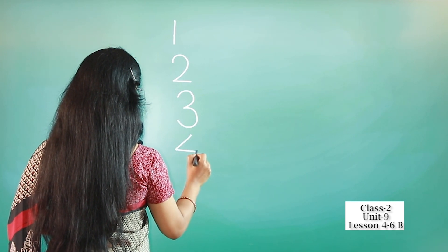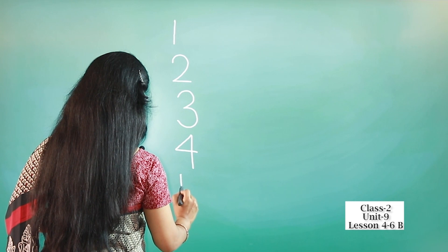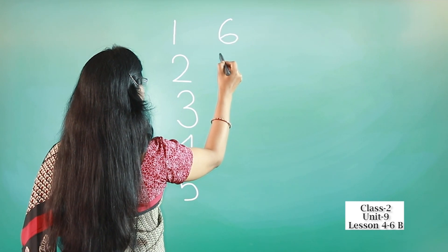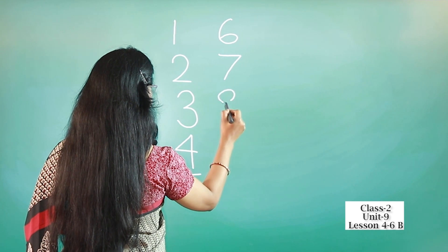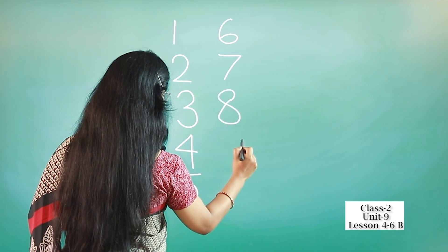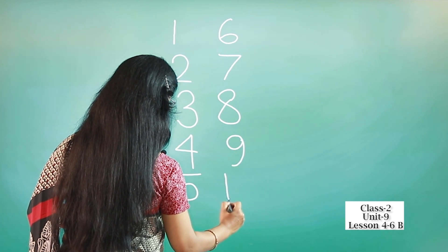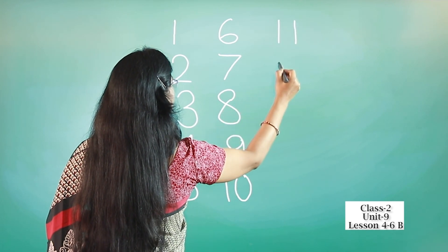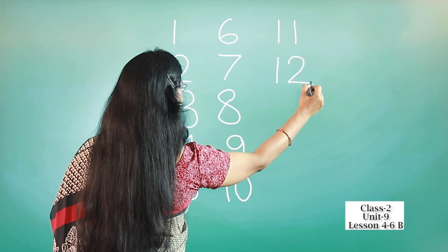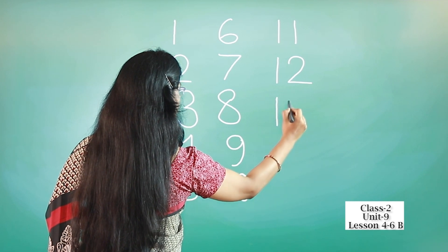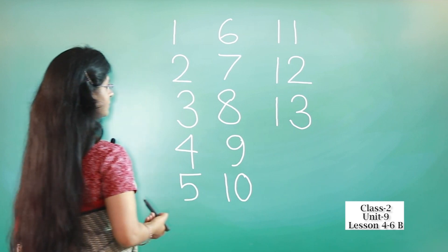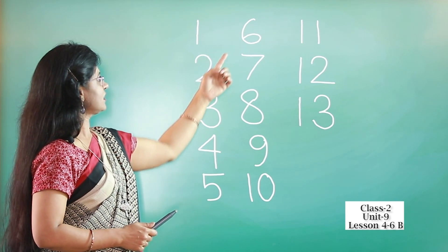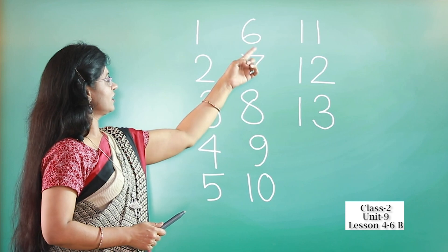Three, four, five, six, seven, eight, nine, ten, eleven, twelve, thirteen. Write on your notebook like this: one, two, three, four, five, six, seven, eight, nine, ten, eleven, twelve, thirteen.